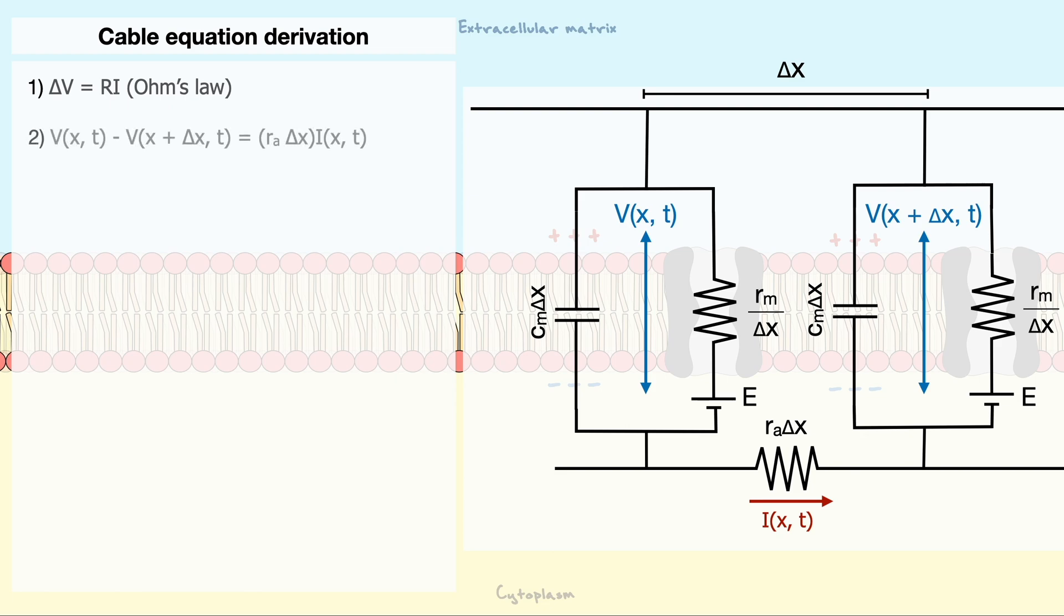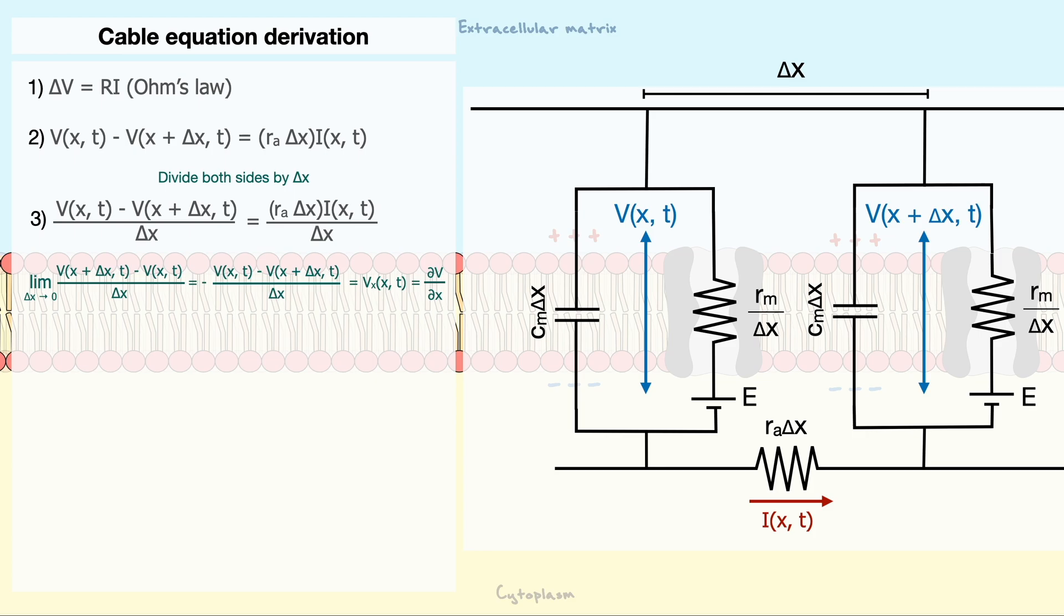Let's start by analyzing the voltages through the perspective of Ohm's law. The difference in voltage between the point x and x plus delta x is equal to the axial resistance times the current going through it. If we divide both sides by delta x, we arrive at a very special equation. Indeed, notice that on the right side,